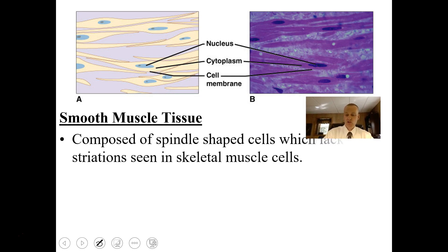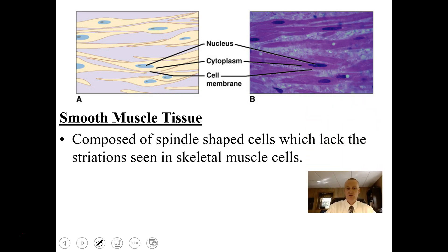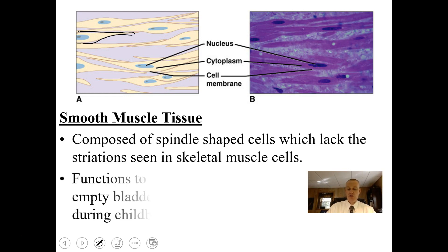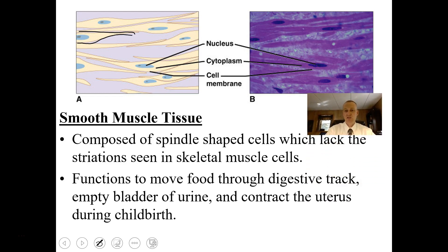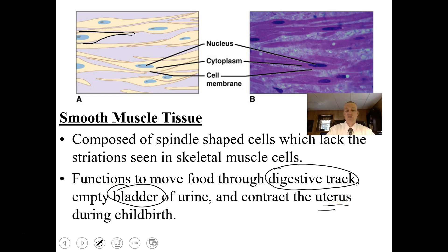Smooth muscle tissue is composed of almost spindle-like cells — kind of pinched at the ends. They do not have striations and they are not multi-nucleated. They function to move food through the digestive tract. Your esophagus, stomach, small intestine, and large intestine all have smooth muscle tissue. Your urinary bladder has smooth muscle tissue so it can contract and release urine, and the uterus is made of smooth muscle tissue, which will contract during childbirth to expel the baby.